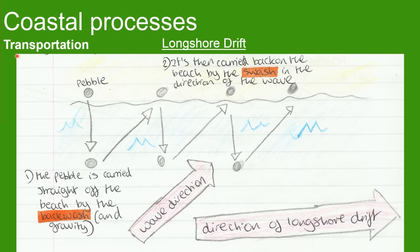The next coastal process is transportation, so we're looking at longshore drift. A pebble is carried in a straight direction down the beach by the backwash and gravity. However, the waves move at an angle, so the pebble is pushed back onto the beach by the swash in the direction of the wave. This process repeats over and over as the pebble moves along the beach — this is called the direction of longshore drift.